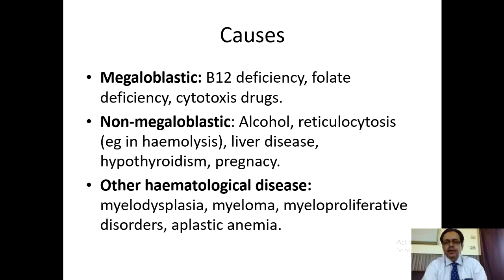The causes of macrocytic anemia are: megaloblastic anemias including vitamin B12 deficiency, folate deficiency, cytotoxic drugs; and non-megaloblastic causes including chronic alcohol intake, reticulocytosis especially in hemolysis, liver diseases, hypothyroidism and pregnancy. Other hematological disorders include myelodysplasia, myeloma, myeloproliferative disorders and aplastic anemia.